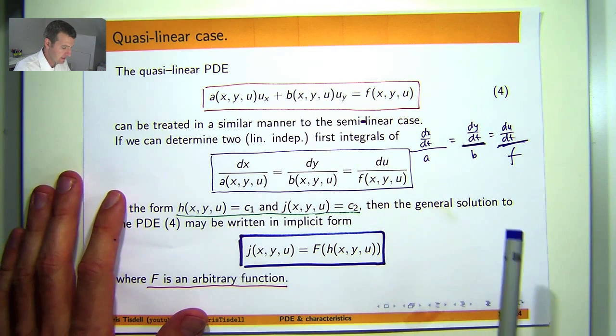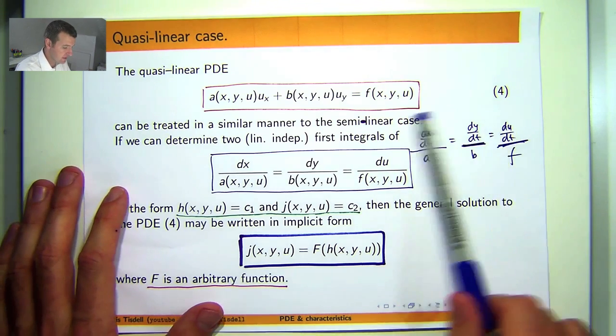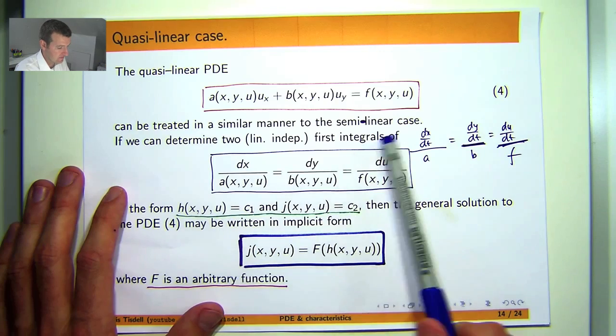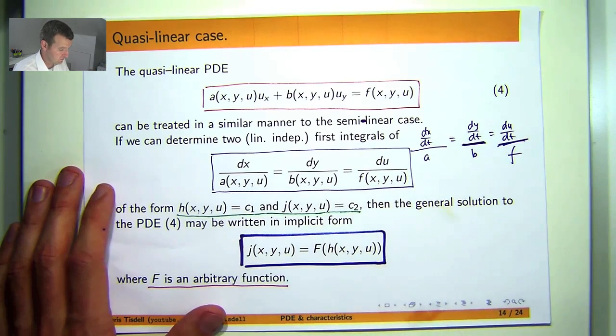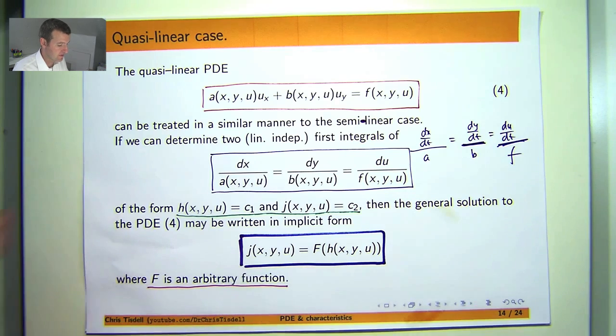So essentially the recurring method here, the method of characteristics, involves looking at these expressions here and trying to solve for two independent solutions or first integrals. And then you combine these expressions via a functional relationship where big F is an arbitrary but differentiable function.